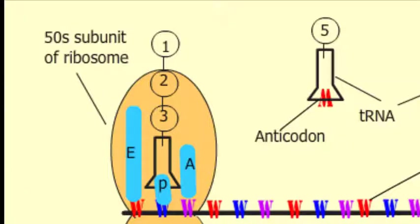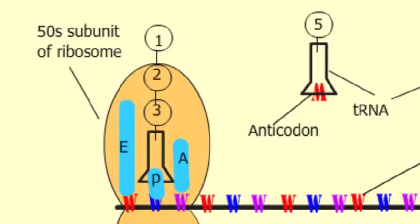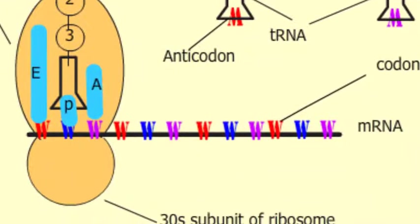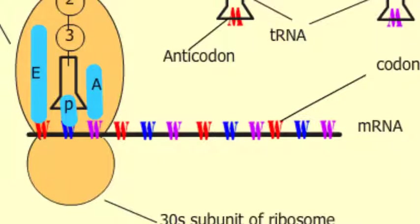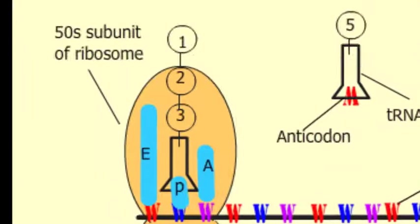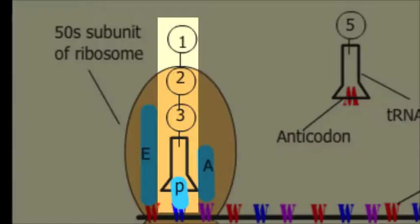Messenger RNA or mRNA has codons — triplets of three nucleotides which code for specific amino acids. A tRNA with the growing peptide chain of three amino acids can be seen at the P site, bound by codon-anticodon recognition.